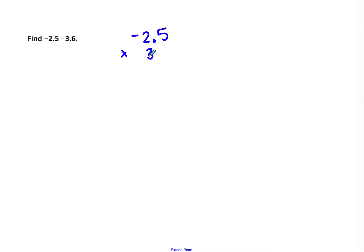Let's try another decimal example: negative 2 and 5 tenths times 3 and 6 tenths. It doesn't matter which one has a greater absolute value — put the one with the most digits on top. These both have two digits, so I'll just put the first one on top. Negative 2.5 on top, 3.6 on bottom. The decimals happen to line up here, but they don't always have to — just make sure your last place values line up. Now I'm ready to multiply.